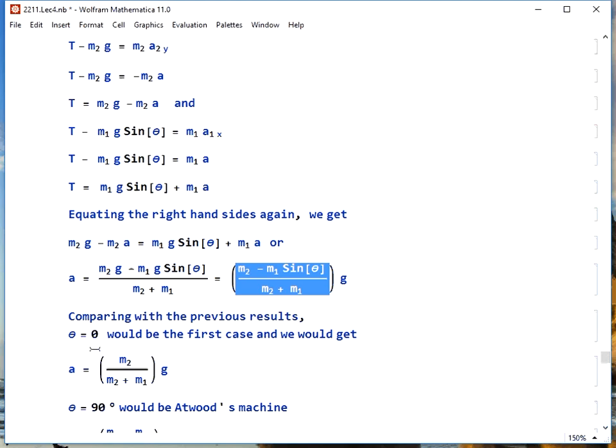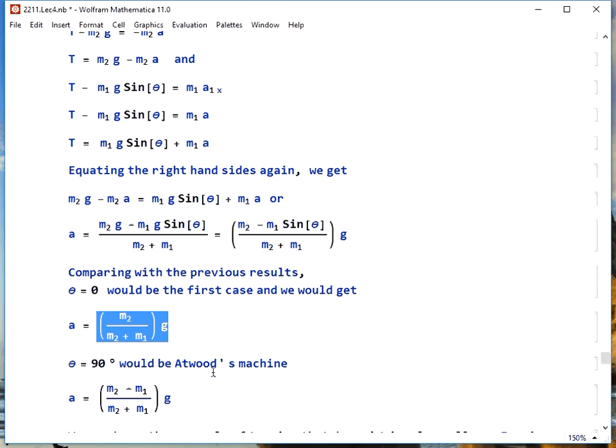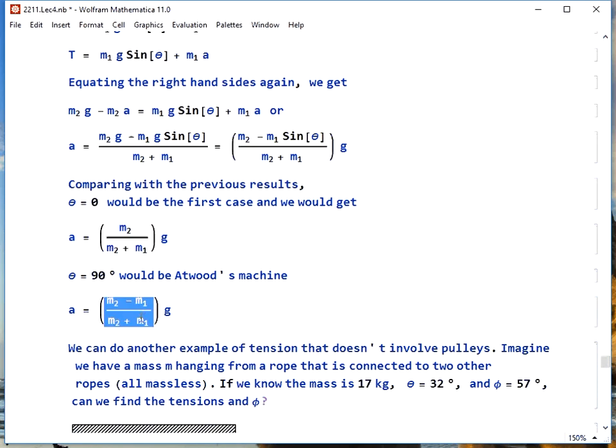We can compare this with what we've gotten before, because if theta equals 0, that would be the case of block on the table and block hanging off the side. Sine of 0 is 0, and our acceleration would reduce to this, which is what we got before in that case. If theta equals 90 degrees, that would be Atwood's machine, and we would get the difference in masses over their sum times g. That's what we got in the Atwood's machine case.